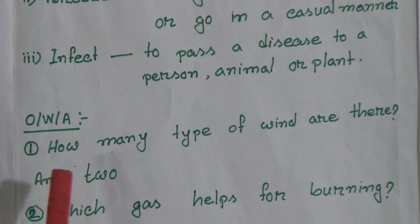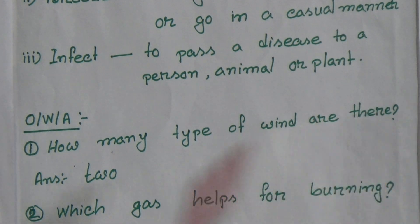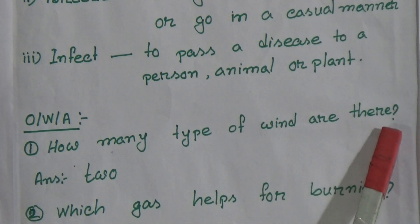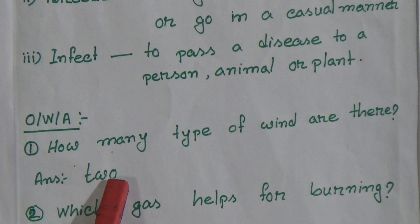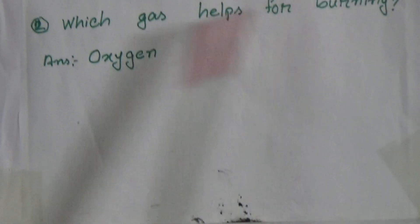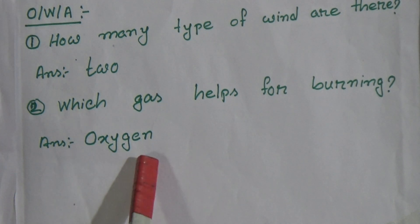One-word answers. Number 1: how many types of wind are there? Answer: 2. Number 2: which gas helps for burning? Answer: oxygen — O-X-Y-G-E-N.